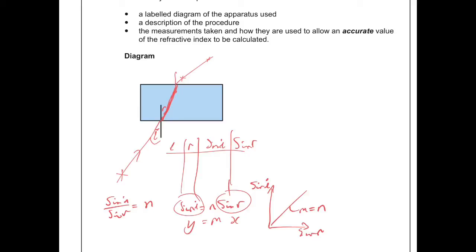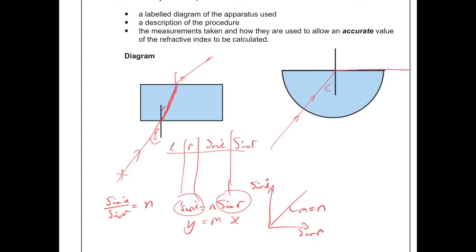That's quite a long method, so there is another way. If you take a glass block and instead send light towards it at the critical angle, the light will come out at 90 degrees. You should see, as well as the 90-degree refracted ray, total internal reflection, with light reflecting out. At that point, the angle between the incident and reflected rays inside would be 2c.